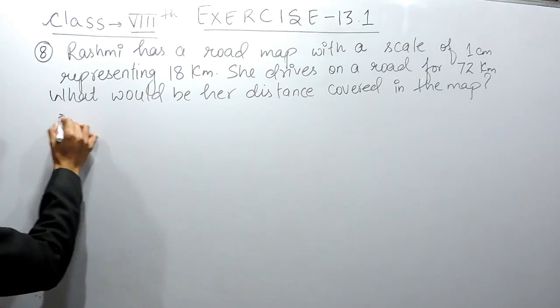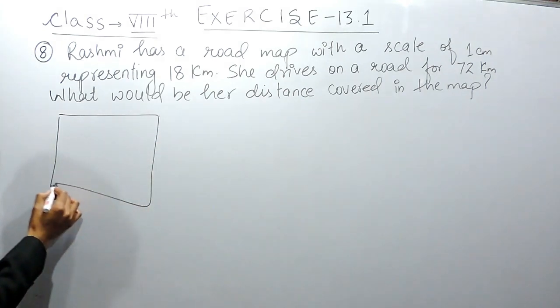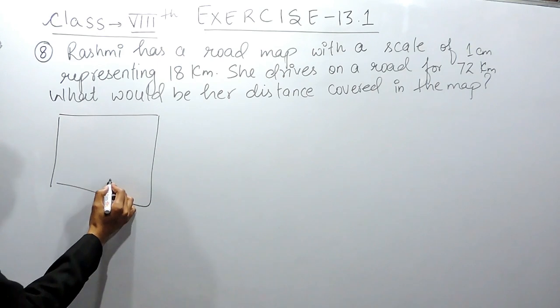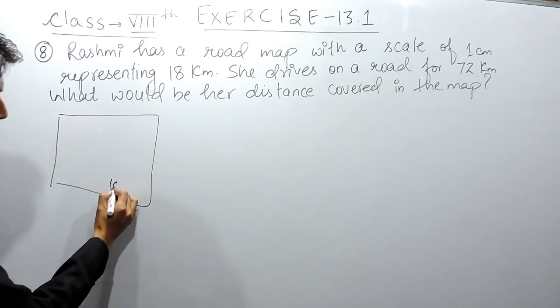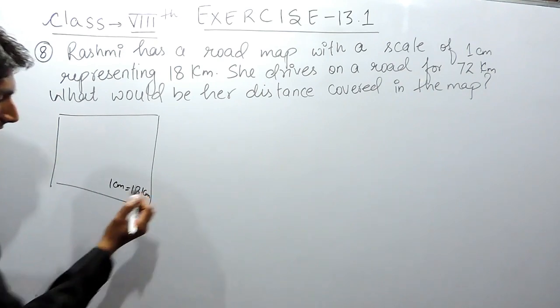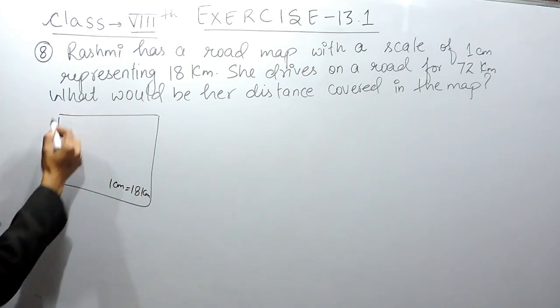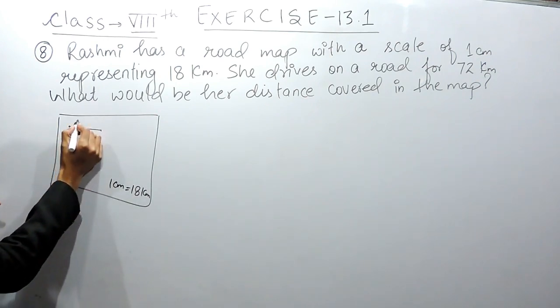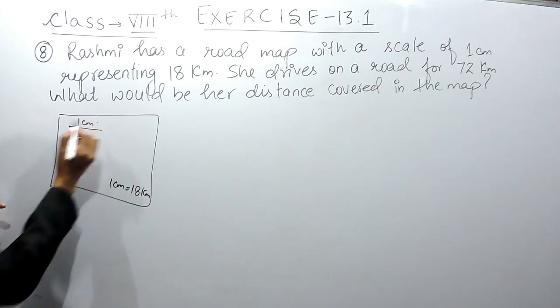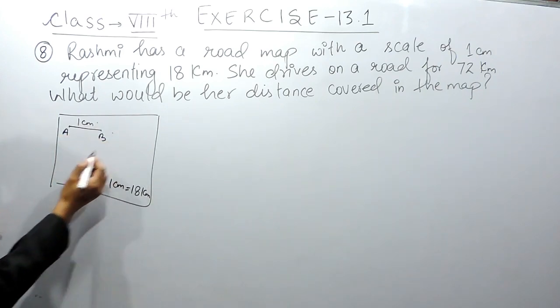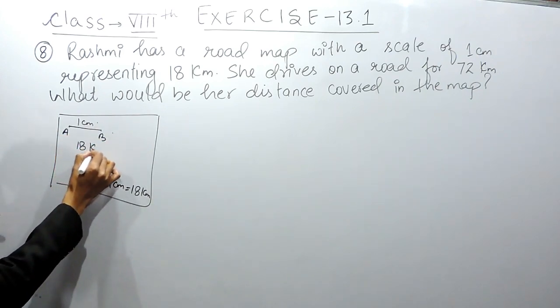It means Rashmi has a small road map and here it is given that 1 centimeter is equal to 18 kilometers. So on this map, if I cover from here to here and if this is 1 centimeter, in actual, from place A to B, I have traveled 18 kilometers.